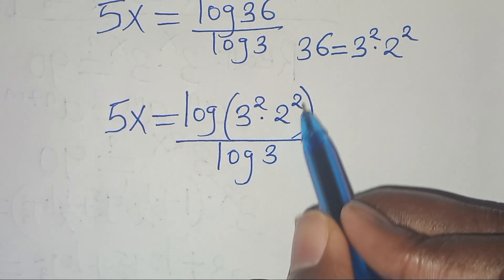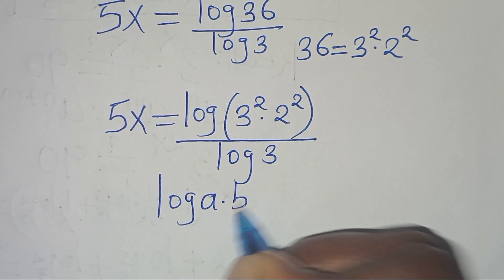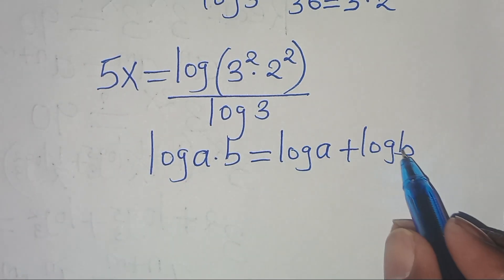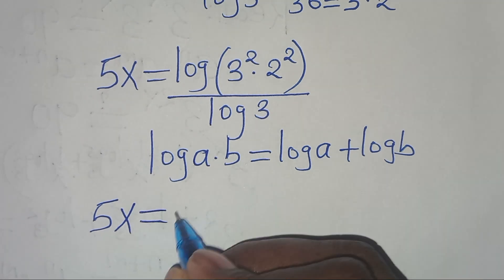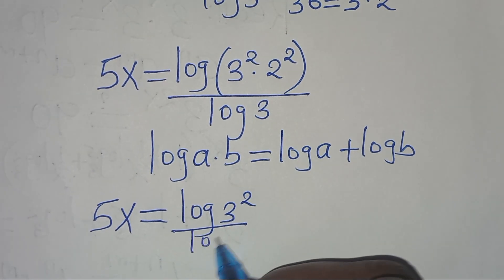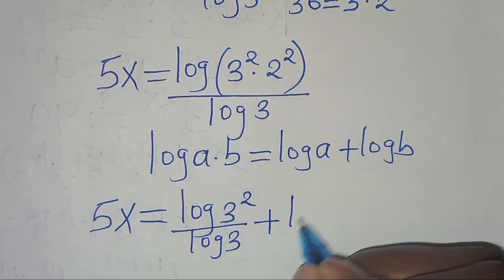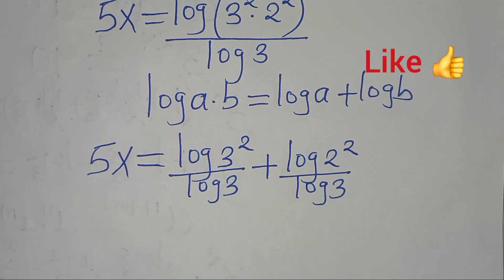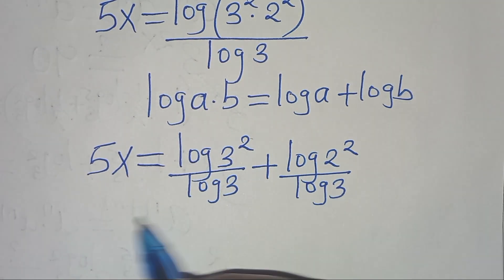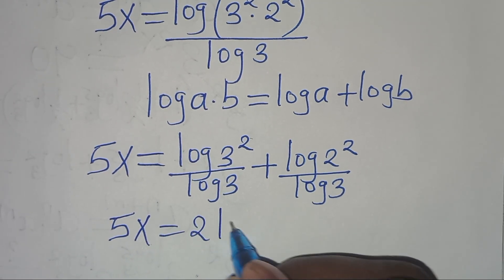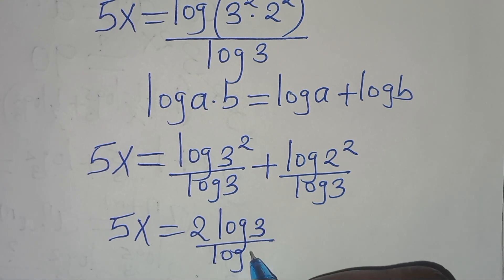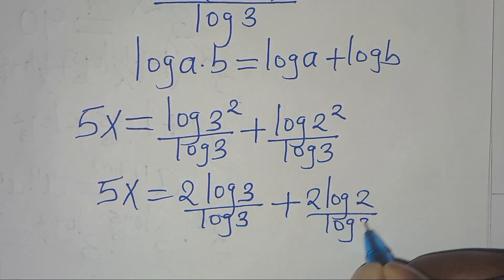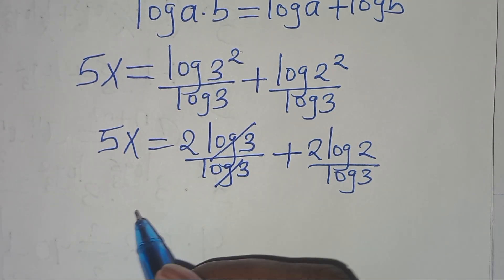Now log(3² × 2²) is in the form log(a·b), which equals log(a) + log(b). Applying this property: 5x equals log(3²) divided by log(3), plus log(2²) divided by log(3). Applying the power property, log(3²) becomes 2·log(3) and log(2²) becomes 2·log(2). Simplifying log(3) over log(3), we get 5x equals 2 plus 2·log(2) divided by log(3).